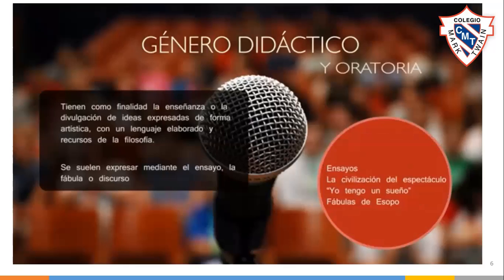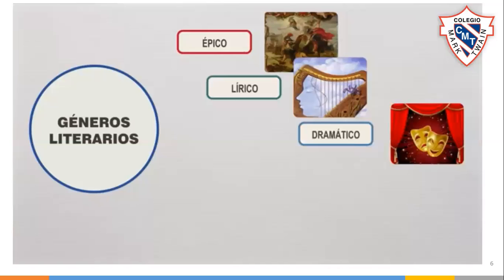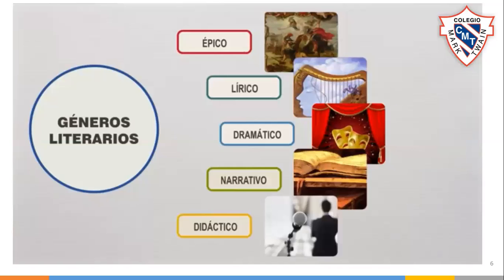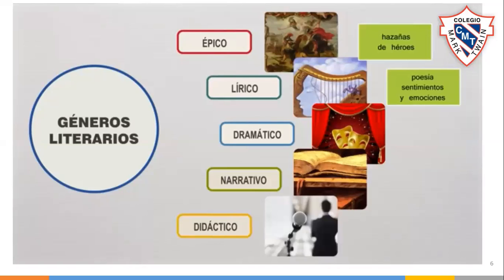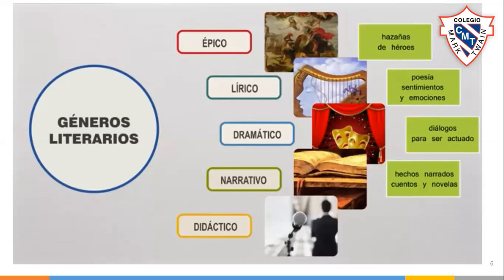Repasemos los puntos clave de cada género literario. El género épico narra hazañas de héroes. Las obras líricas son básicamente poesía, expresan sentimientos y emociones. El género dramático se expresa mediante diálogos y es escrito para ser actuado en un escenario. Los textos narrativos son hechos narrados, incluyen la novela y el cuento. El género didáctico y la oratoria están hechos para enseñar o expresar ideas.